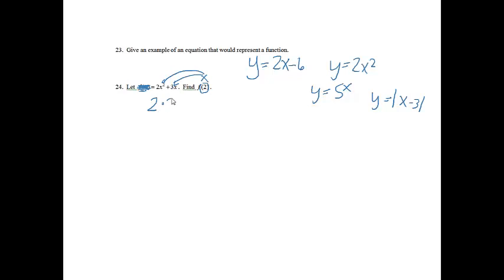So I'm going to have 2 times 2 squared plus 3 times 2. And then if you remember order of operations, we do powers first, so we'll do 2 squared, which is 4. So I'll have 2 times 4 plus 3 times 2. The next thing that comes is multiplication, so 2 times 4 is 8, and 3 times 2 is 6, and then we'll add those two. 8 plus 6 is 14.